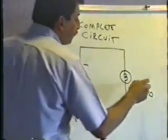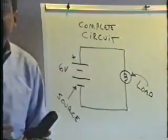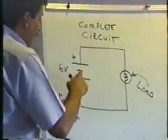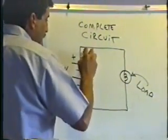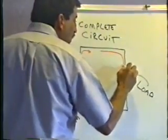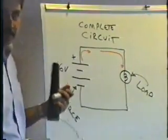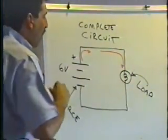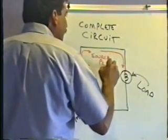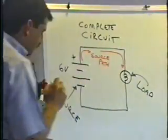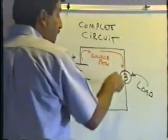You also need two other things. You need to have a way to get the power from the source to the load — some kind of a conductor, some kind of a wire, some kind of a piece of metal, something that's going to conduct the electricity. We call that the source path. The source path is the path that the electricity is going to follow as it goes from the source to the load.